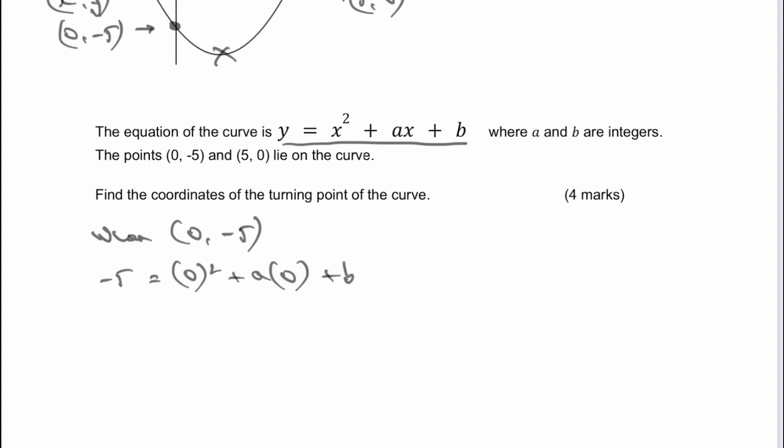So therefore there's no value for any of the x terms there. I can just from this work out that -5 equals b, and that's good because I've now got -5 as being the value of that particular equation.